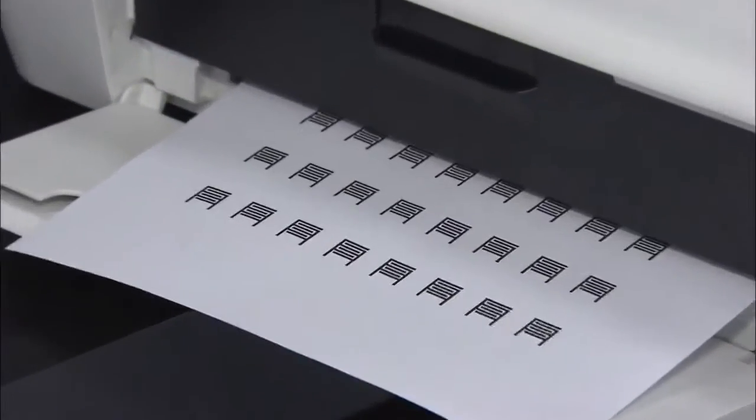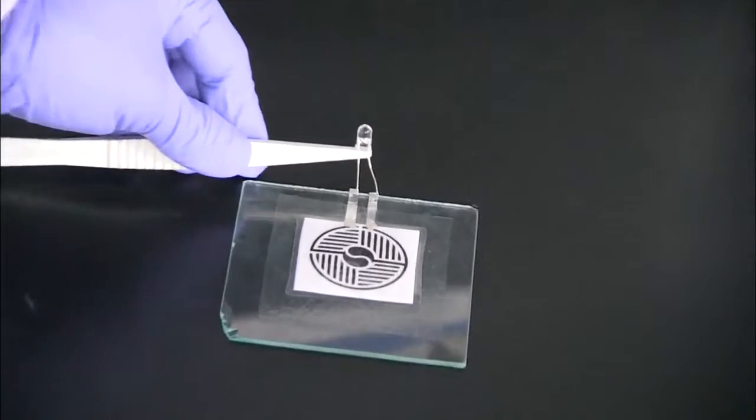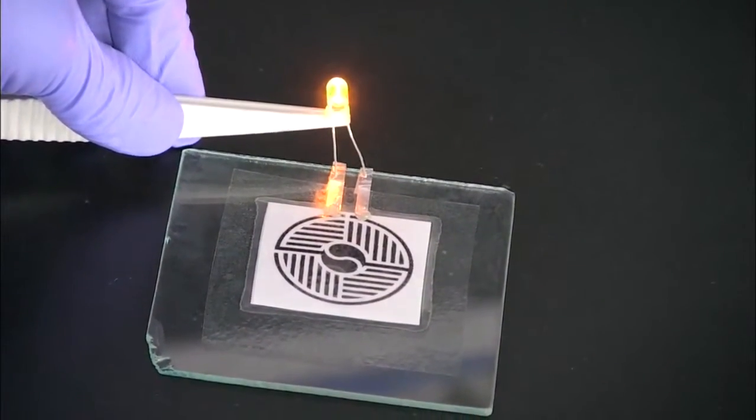A regular printer prints out images. When the printed images are connected to a power cord, the light is turned on.